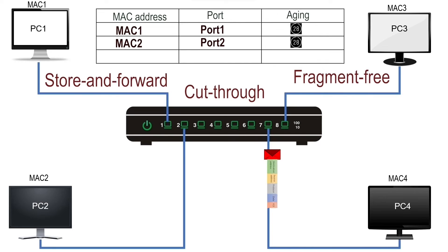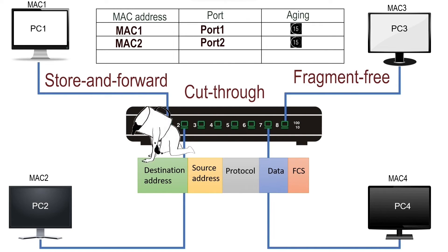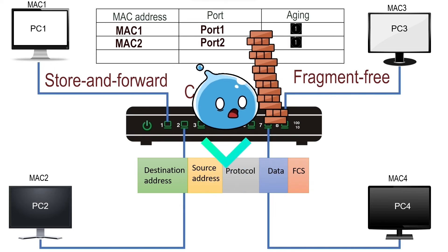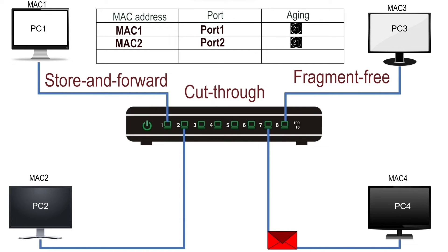In the cut-through method, the switch starts forwarding as soon as the forwarding port is determined. Since an Ethernet frame stores the destination MAC address in the first field, the switch can start forwarding received bits before all bits are received. This method does not check the frame's condition before forwarding, which reduces latency but also propagates errors. Of all three switching methods, this is the fastest, but it may forward frames that contain errors.